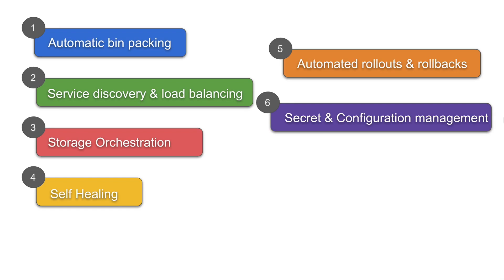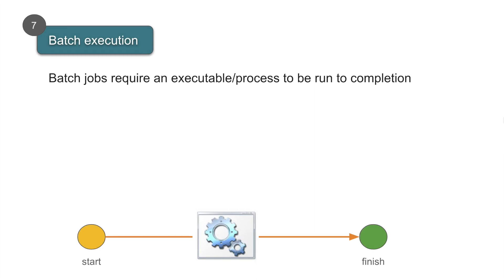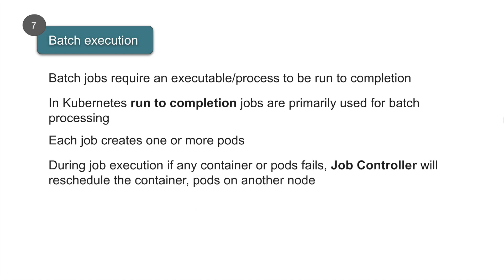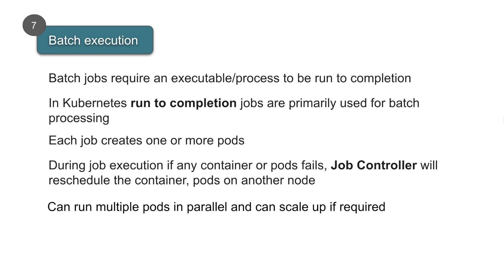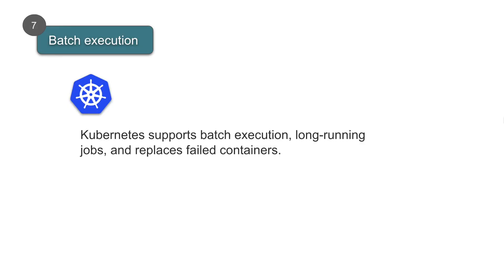The next feature is batch execution. A batch job requires an executable or a process to run to completion. In Kubernetes, we have run-to-completion jobs used for batch processing. Each job can create one or more pods based on requirements. If any container or pod fails during execution, it will be rescheduled on another available node, and the job controller handles this. It can also run multiple pods in parallel and scale up if required. Once the job is completed, the pod moves from running state to a shutdown state.